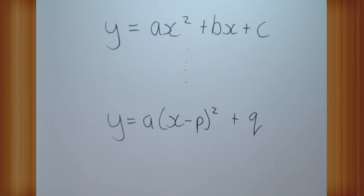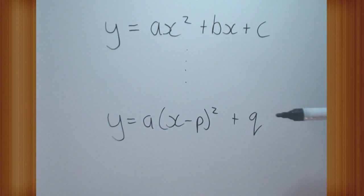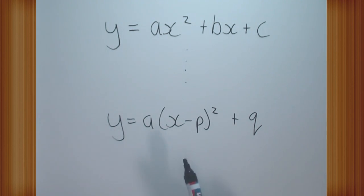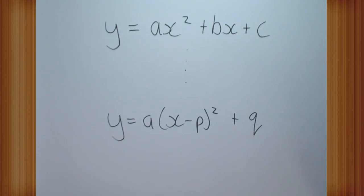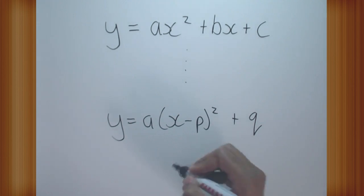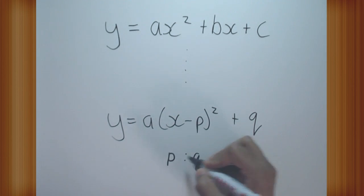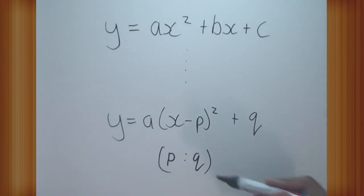When we complete the square, what we want to do is turn an equation of this form into an equation of this form. So we want ax squared plus bx plus c to turn into a times x minus something squared plus something else. It's the same graph, it's just written in a different format. The usefulness of writing it in this format is that if I say p and q as a point, this is the turning point of this parabola.